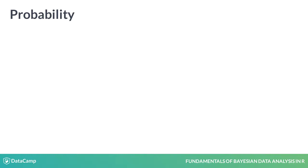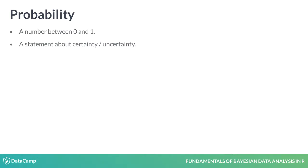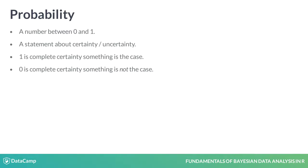Confusingly, the term probability can be defined in different ways. All definitions agree on the basic rules of probability and that it's a number between zero and one, but they don't agree on what probabilities stand for. The definition we are going to use here is that a probability is a statement about the certainty or uncertainty of different outcomes, where a probability of one means complete certainty that something is the case or is going to happen, and zero means complete certainty that this something is not the case or that it is not going to happen.